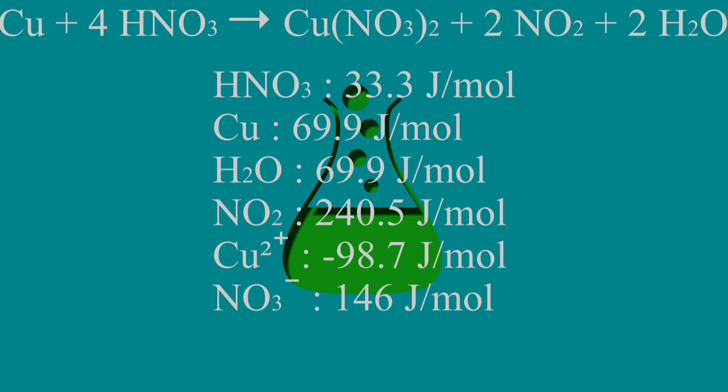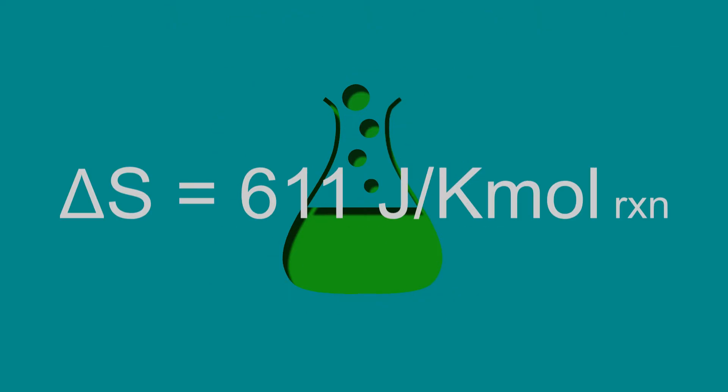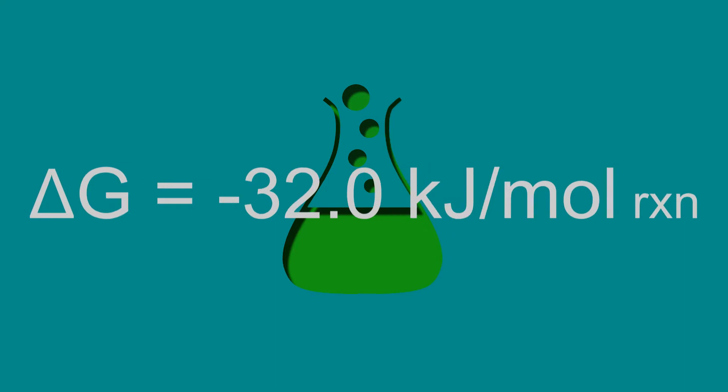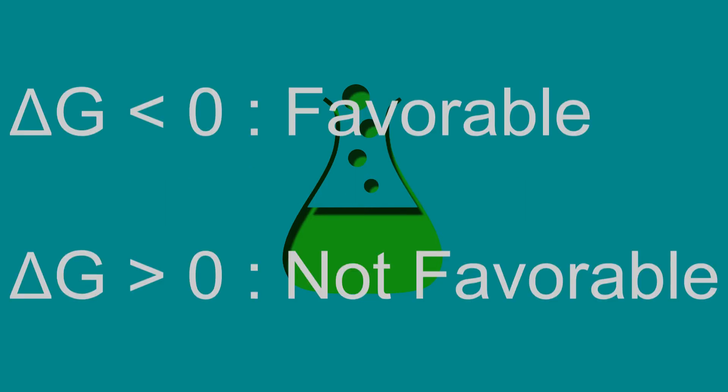Repeating this calculation with standard entropy of formation values yields an entropy change of reaction of 611 joules per Kelvin mole of reaction. Using these two values, the calculated Gibbs free energy value is negative 32 kilojoules per mole of reaction. Since this value is negative, it can be said that the reaction of copper and nitric acid is thermodynamically favorable at standard conditions.